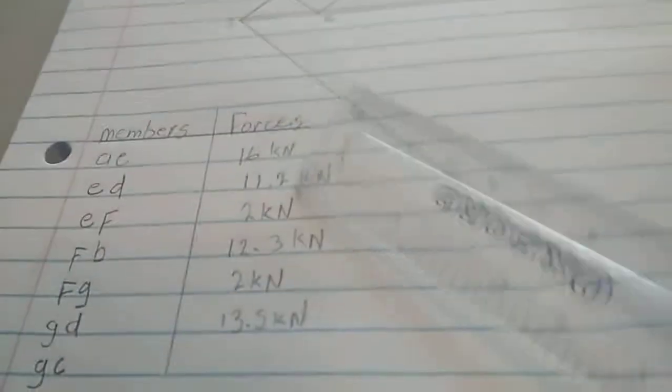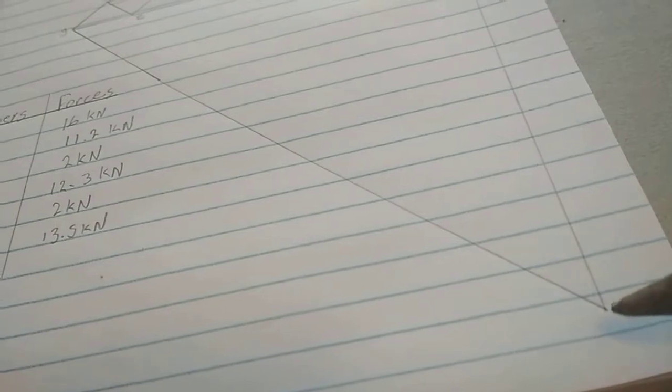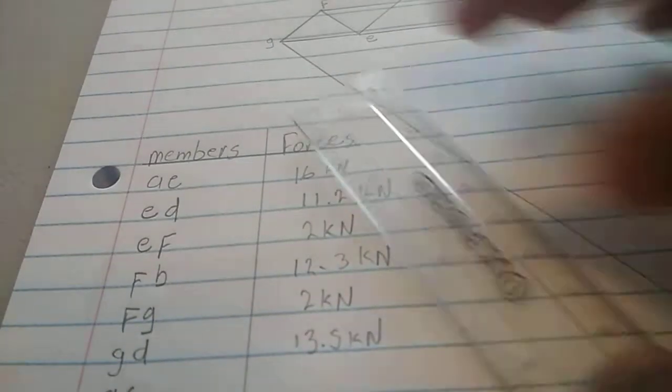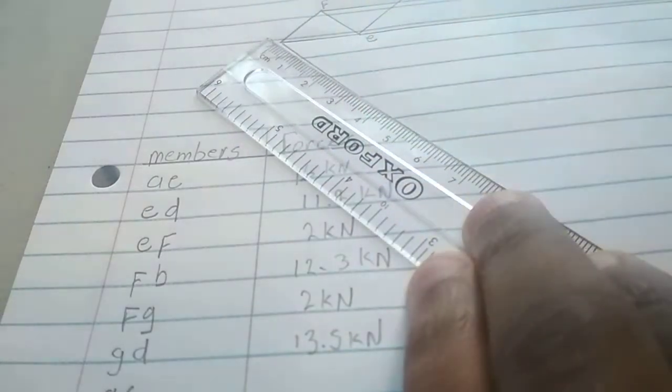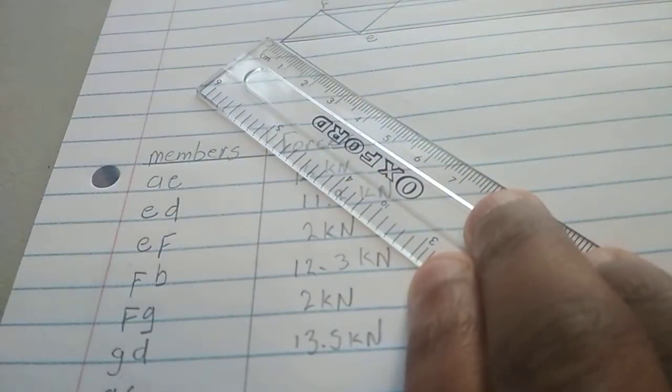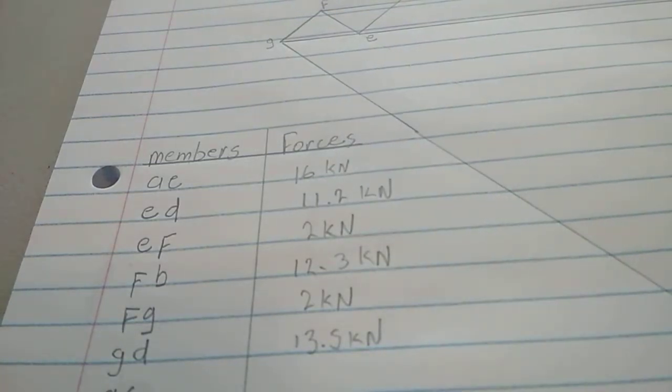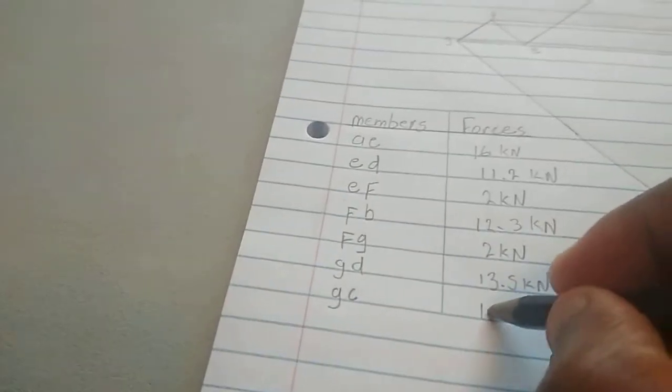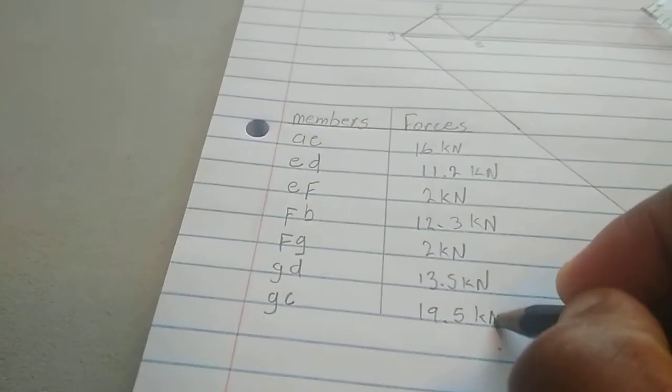And then the last one is GC. All right, there is a G over there, and I see it down here. So we just measure that. 15. It's about 19.5, 19.5 kilonewtons.